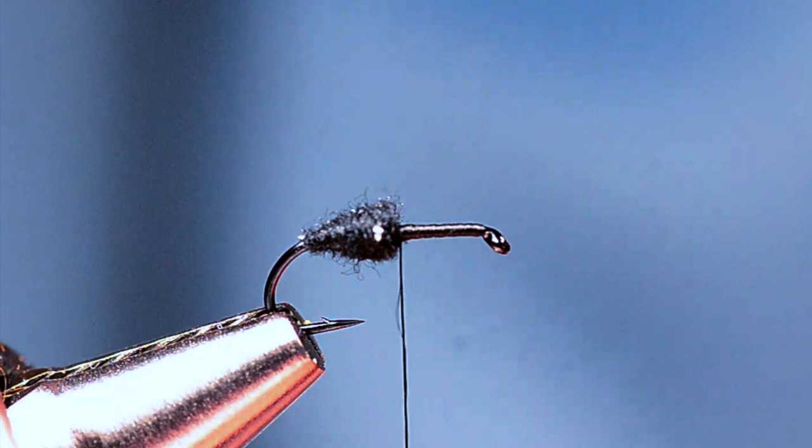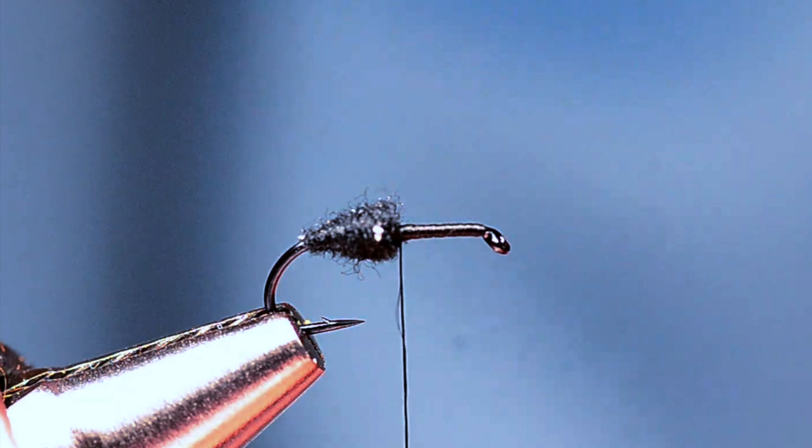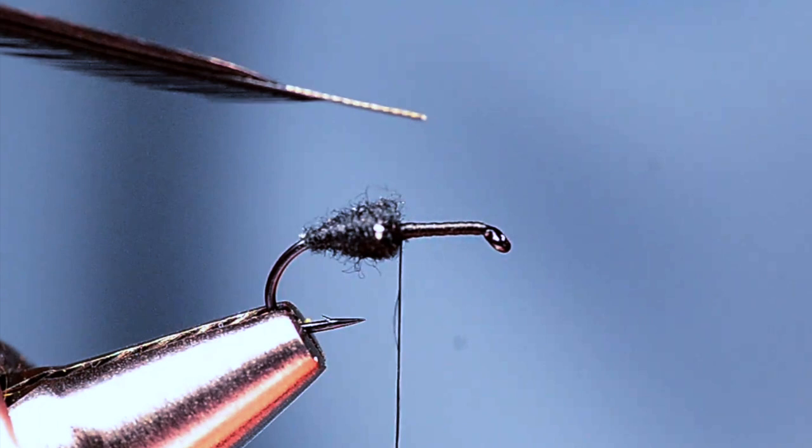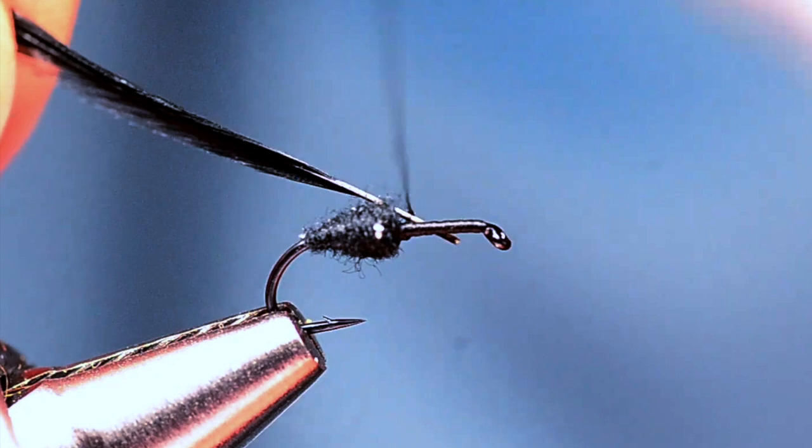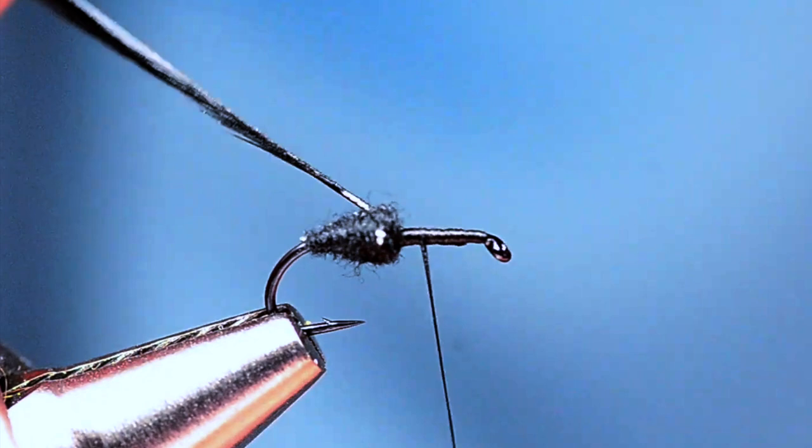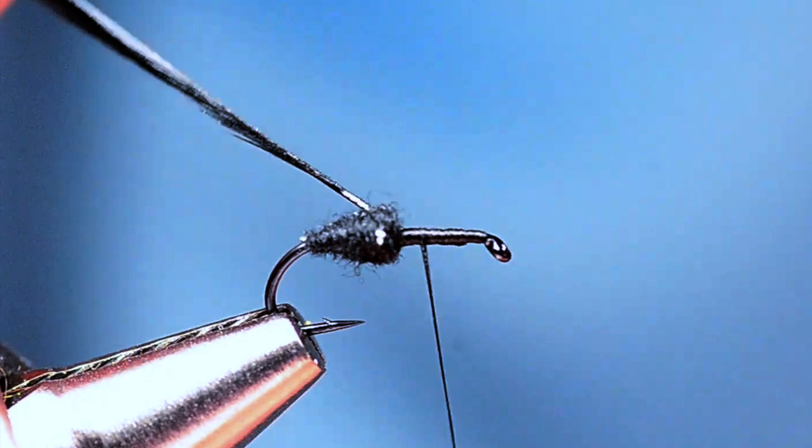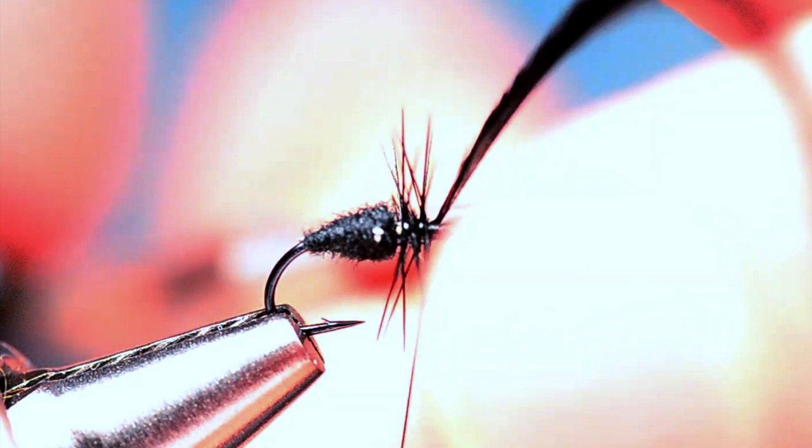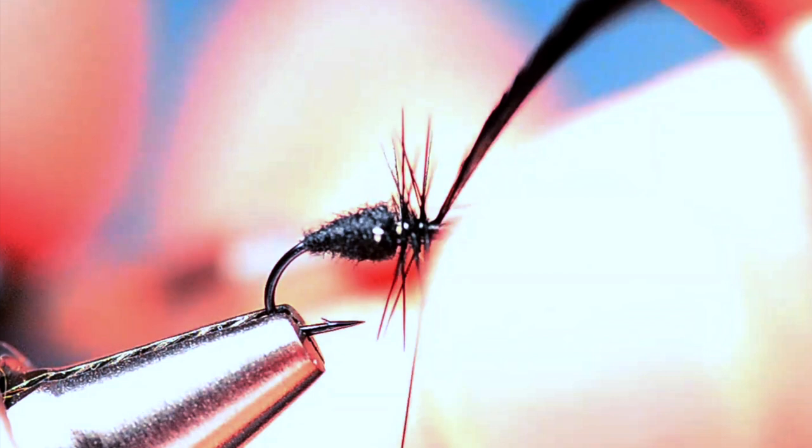I'm going to take a black saddle feather. I want to strip some of the base and then on a fly like this, I'd like to strip a little bit more on the inside of the turn. I'm going to tie it in right up against here at the front edge of the body. I come forward over that stem, back my thread up. The first half turn or so is going to be bare stem, and that's going to allow that feather to stand up nice and straight. I'm just going to get two or three turns, and I'll tie that feather off.